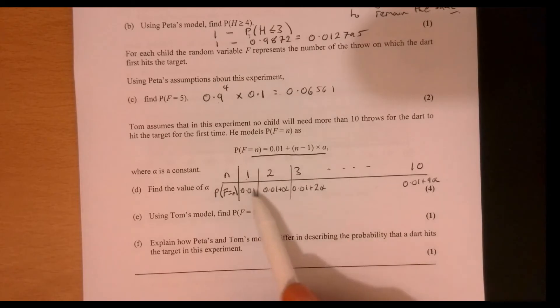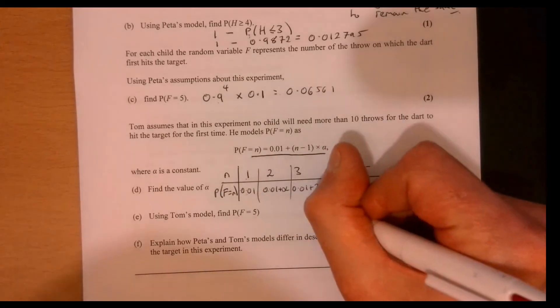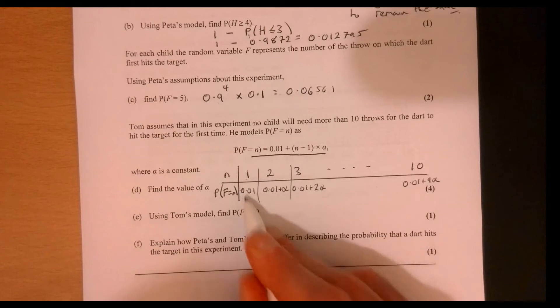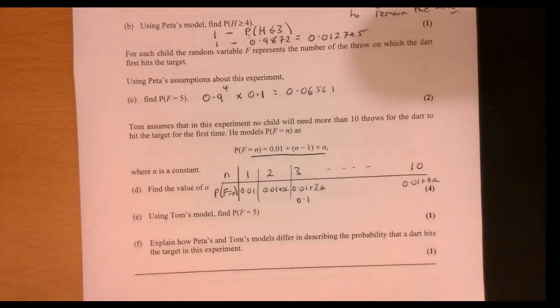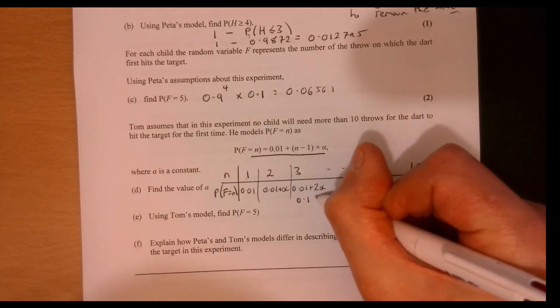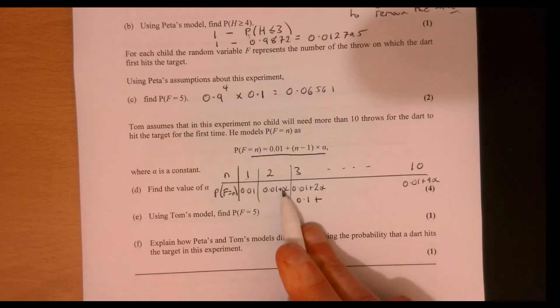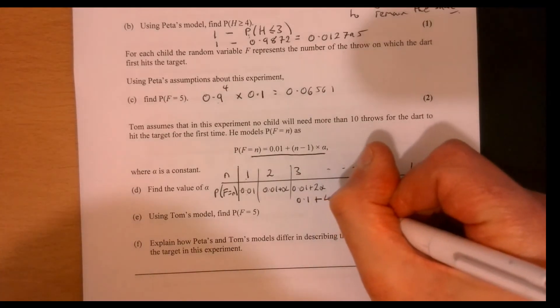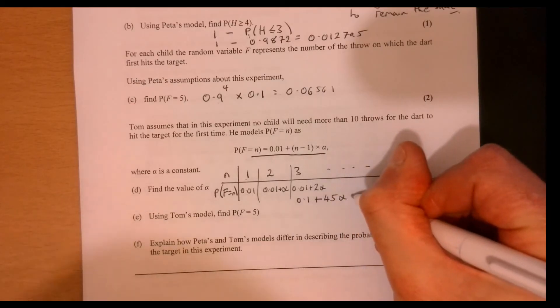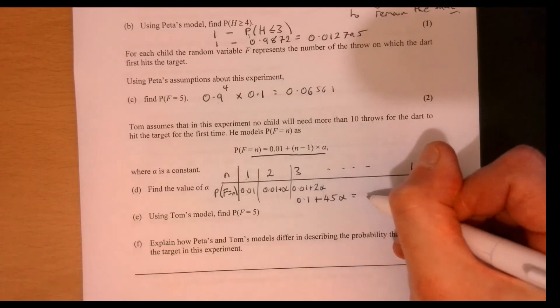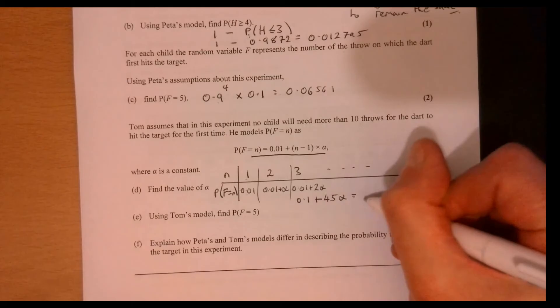So these must add up to one. So if you add all of these up, that's going to give you, so this plus this, we've got 10 of these, haven't we? So that's going to be 0.1. And then plus, so if you think about how many of these you've got, you've actually got 45 of them.